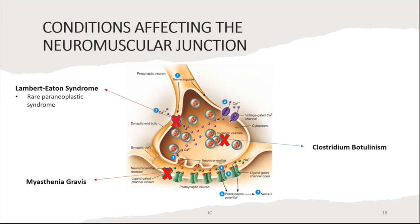Some conditions that affect the neuromuscular junction: Lambert-Eaton syndrome is a rare paraneoplastic syndrome sometimes associated with small cell lung cancer, in which autoantibodies develop against N-type voltage-gated calcium channels. Clostridium botulism produces botulinum toxin, which interferes with SNARE proteins, affecting acetylcholine release and causing flaccid paralysis. Myasthenia gravis involves the development of autoantibodies to the nicotinic acetylcholine receptor.